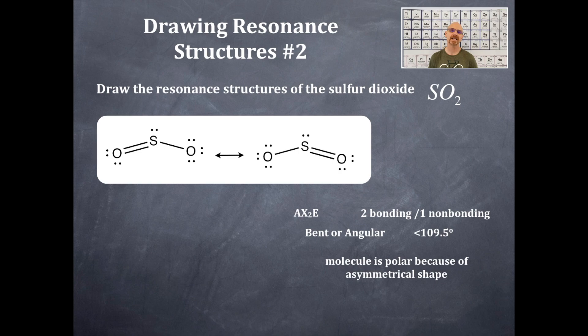Now, this molecule is polar because it has polar bonds. That's the first criteria. It does have polar bonds and the molecule itself is asymmetric. Because it has polar bonds and it's asymmetric, it's a polar molecule.